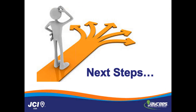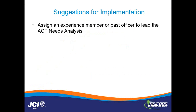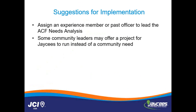Now that we know about the Active Citizen Framework, how do we implement it in our chapters? The first thing we recommend is to look for an experienced member or past officer who can lead this process. It helps to have a project manager type person who's familiar with the organization, knows the membership, and has good community connections to spearhead this and plug people in so they get the most out of this experience. Another idea is to talk to community leaders who may have ideas for projects that need to be run.